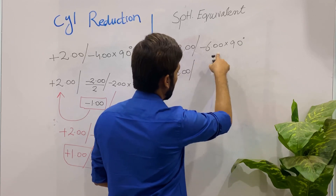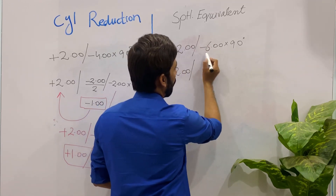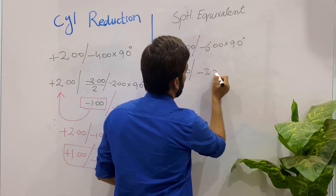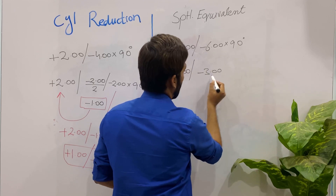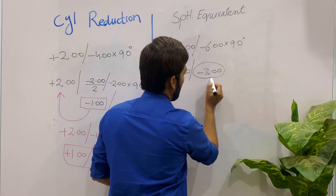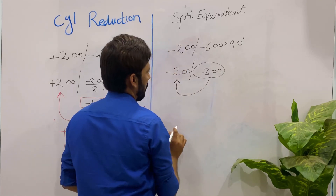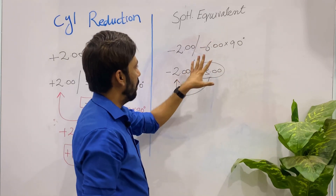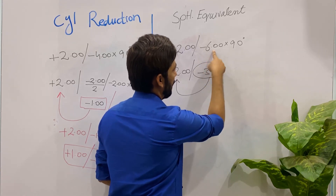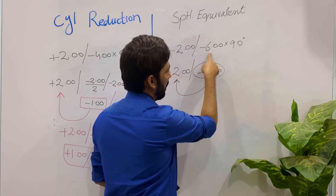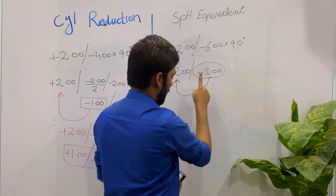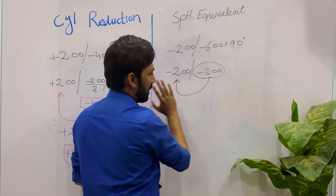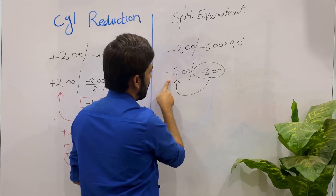The total cylinder is minus six. In spherical equivalent, you simply take half of the total cylinder. Half of minus six is minus three. Now you add this half of the total cylinder into the spherical correction. In spherical equivalent, you take half of the entire cylinder — you don't get to choose a portion — and add it algebraically to the spherical.